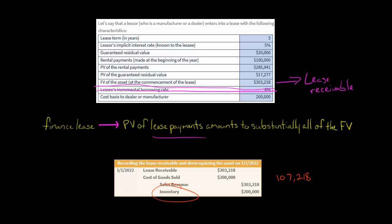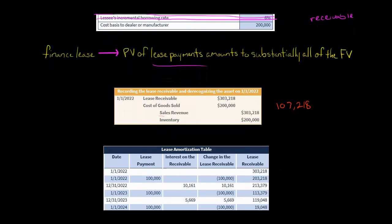The lessor is de-recognizing the asset but also recognizing a lease receivable, which represents the lessor's expectation to receive rental payments and then the residual value — whatever the asset will be worth at the end of the lease term. You add those together and discount them at 5%, and that's how we get the lease receivable. So the lessor is getting rid of inventory, adding a lease receivable, and there's an income statement effect as well.